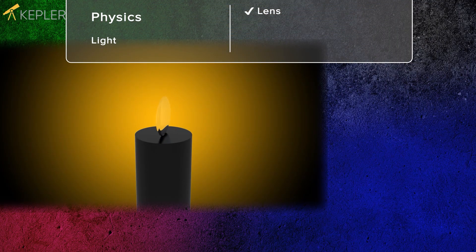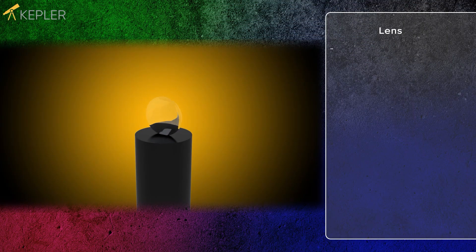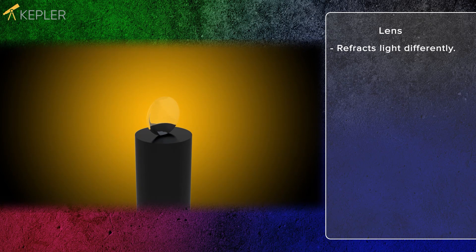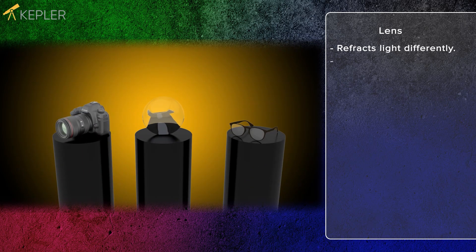A lens is a piece of ground glass or plastic that refracts light differently depending on the type of lens. They are used in cameras, eyeglasses, and more.